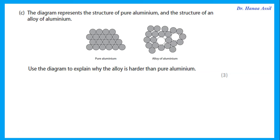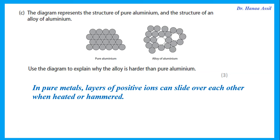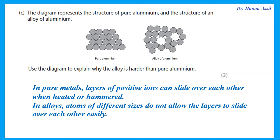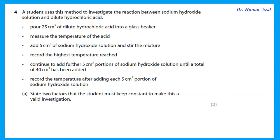The diagram shows the structure of pure aluminium and an alloy. Explain why the alloy is harder. In a pure metal, layers of positive ions can slide over each other, which is why it is malleable. In an alloy, atoms of different sizes are present, and these do not allow the layers to slide over each other easily — so alloys are harder than pure metals.